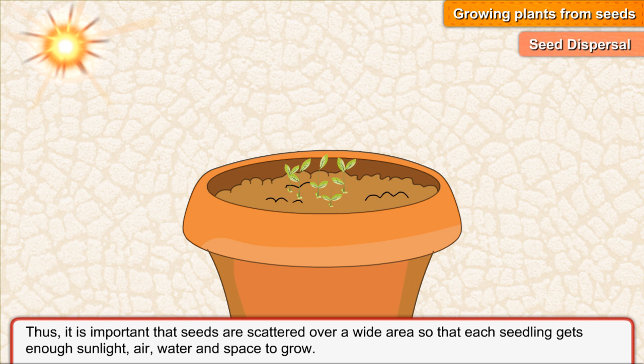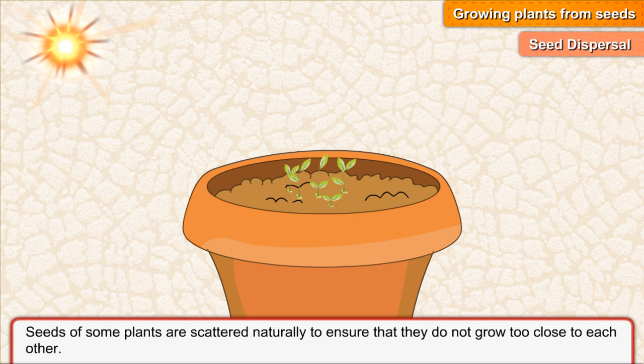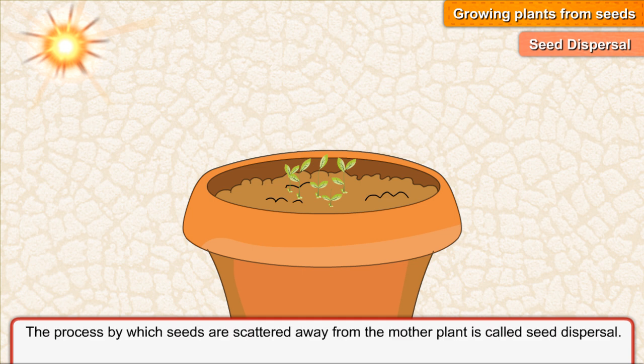Thus, it is important that seeds are scattered over a wide area so that each seedling gets enough sunlight, air, water and space to grow. Seeds of some plants are scattered naturally to ensure that they do not grow too close to each other. The process by which seeds are scattered away from the mother plant is called seed dispersal.